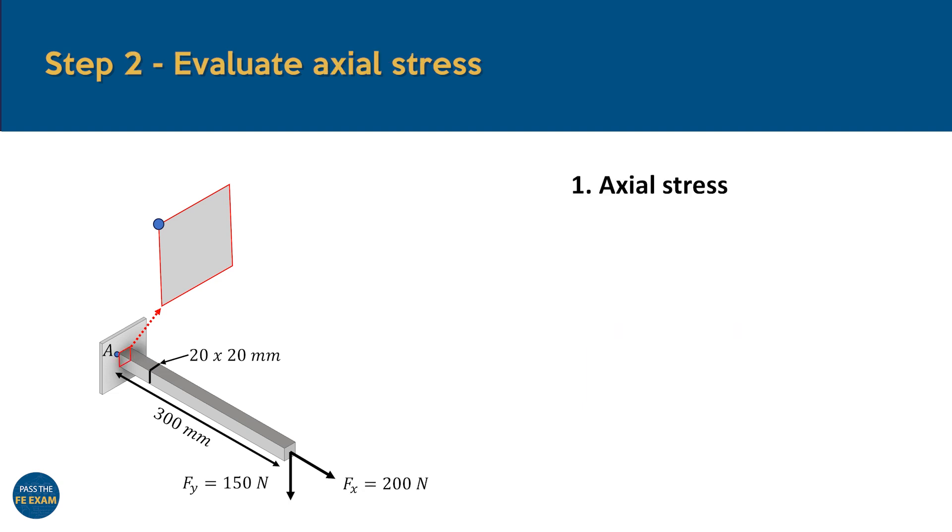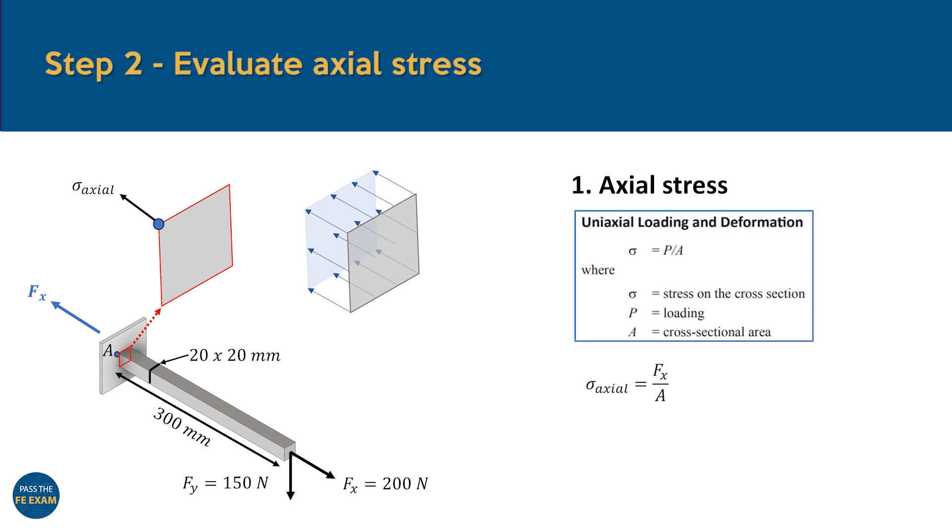Let's take a closer look at the axial stress in our beam. With the axial force Fx pulling on one end, the beam responds with an equal but opposite reaction force at the fixed support, putting the entire beam in tension. This tension creates a uniform stress distribution across the beam's cross-section, as shown in the diagram. Because the beam is in tension, we expect the axial stress to be positive. Now to calculate the stress at point A, we can use the simple formula from the FE handbook: stress equals force divided by area. All we have to do is plug in the given values, and we get an axial stress of 0.5 MPa. And with that done, we're ready to move on to the next part of our question, evaluating the bending stress.